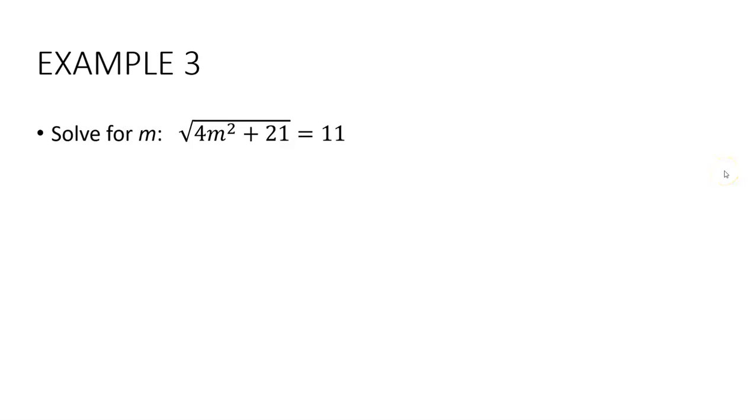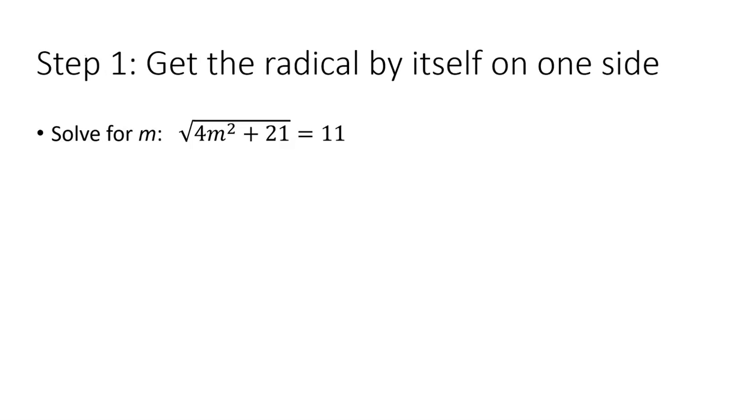Let's look at one more. The square root of all of 4m squared plus 21 equals 11. First, we'll get the radical all alone on one side. It already is.